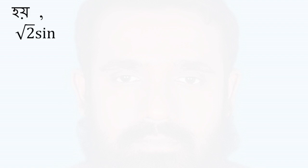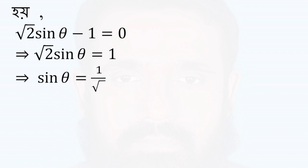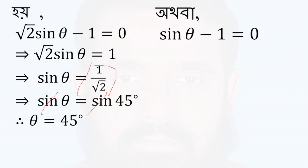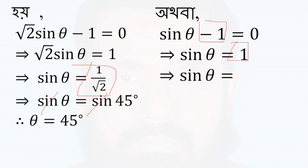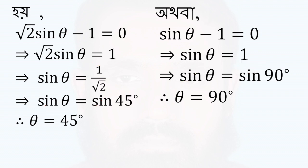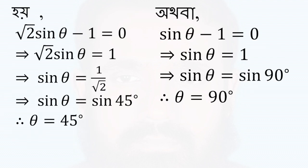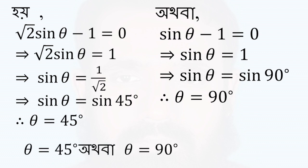Root 2 sin theta minus 1 is equal to 0. So root 2 sin theta is equal to 1. 1 by root 2 is sin 45°. Then sin theta equal to sin 45°. And sin theta minus 1 equals 0, so 1 by sin theta equals 1, giving theta equal to 90°. So the solutions are theta equal to 45° and theta equal to 90°.